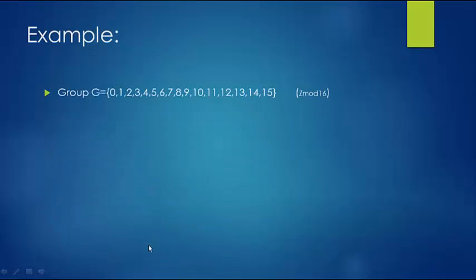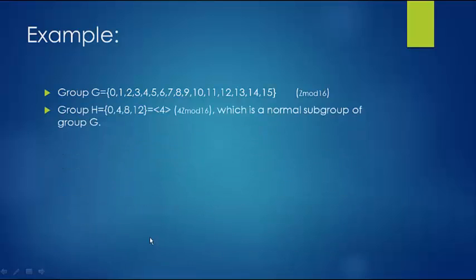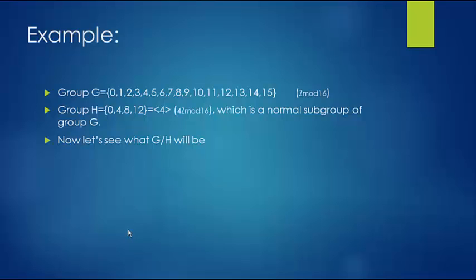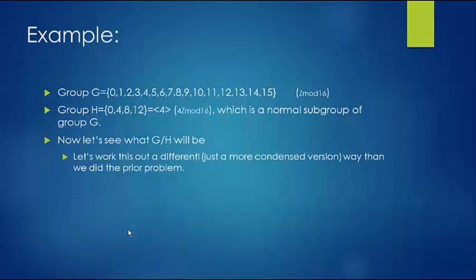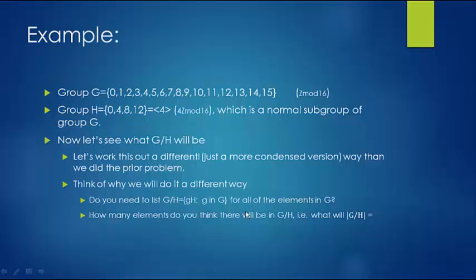Let's look at another example. This time G is the integers mod 16, and our normal subgroup H is {0, 4, 8, 12} — that's 4Z mod 16. Before we even begin listing cosets, we already know the order of G/H is going to be 16 divided by 4, which is 4. So we know there will only be 4 cosets, and we don't need to list more than that.